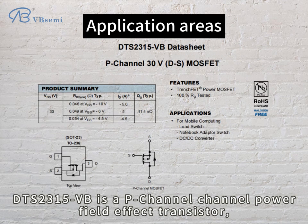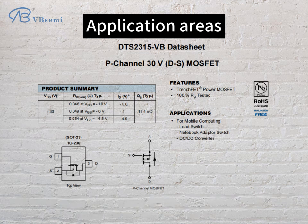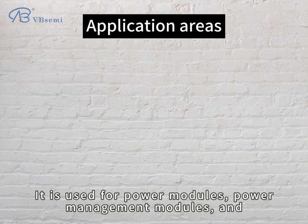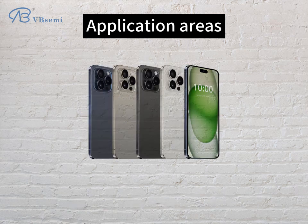DTS-2315VB is a P-Channel power field effect transistor launched by the VB Semi brand. It is used for power modules, power management modules, and communication devices.